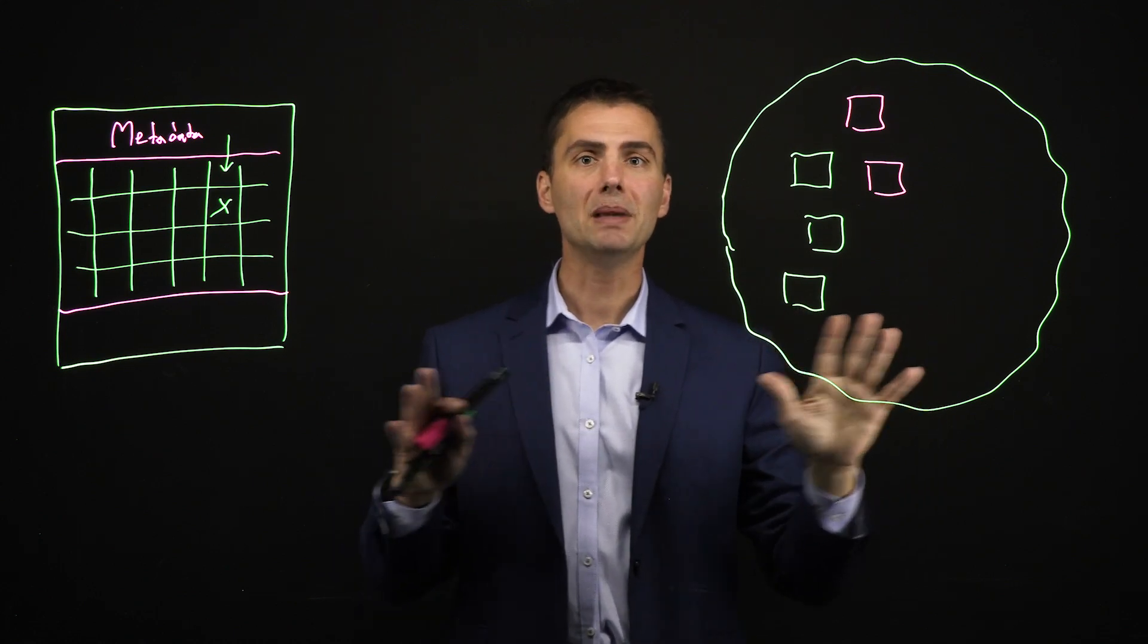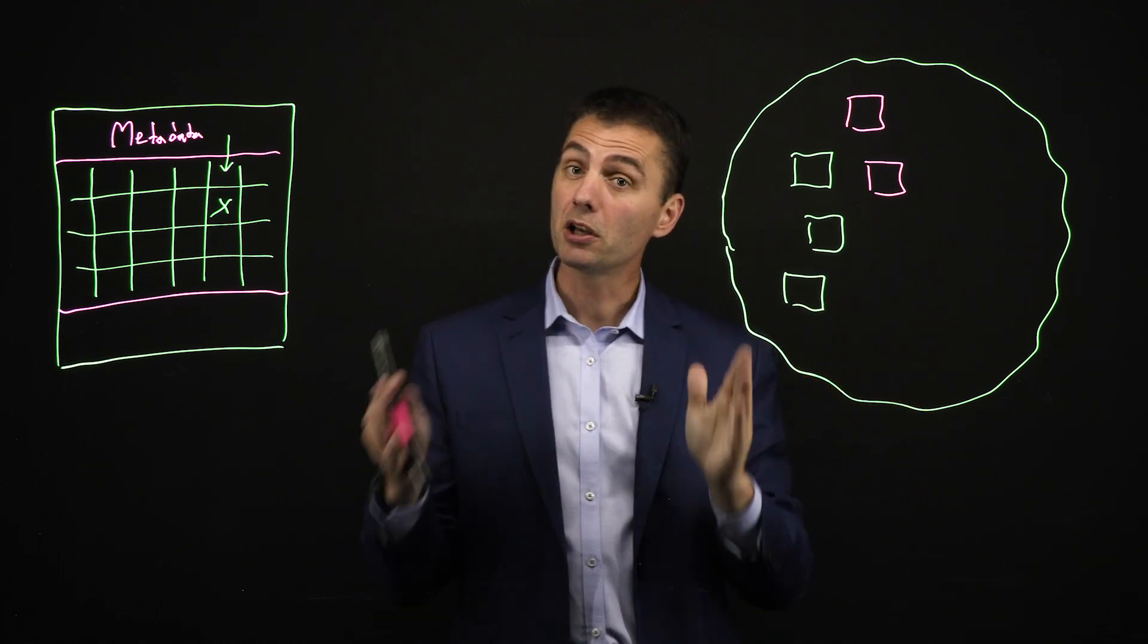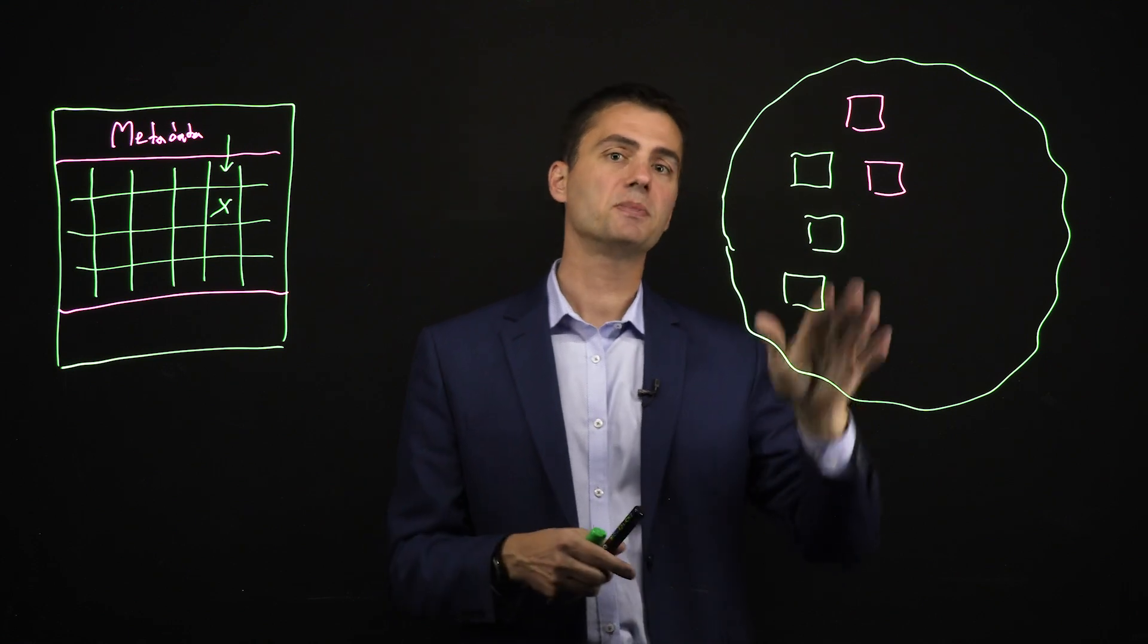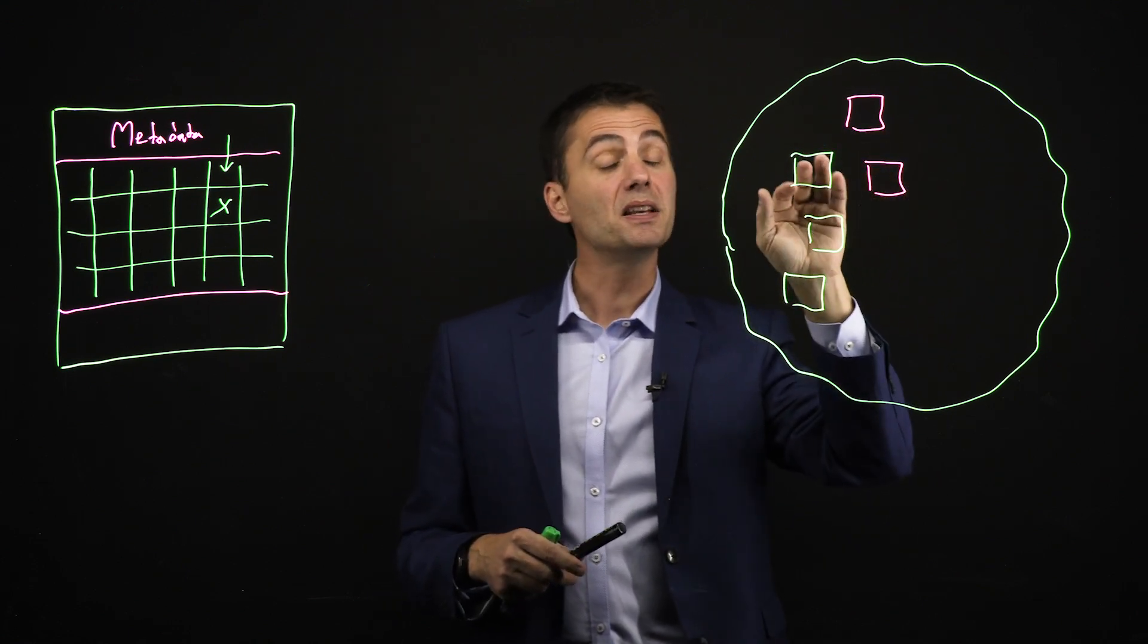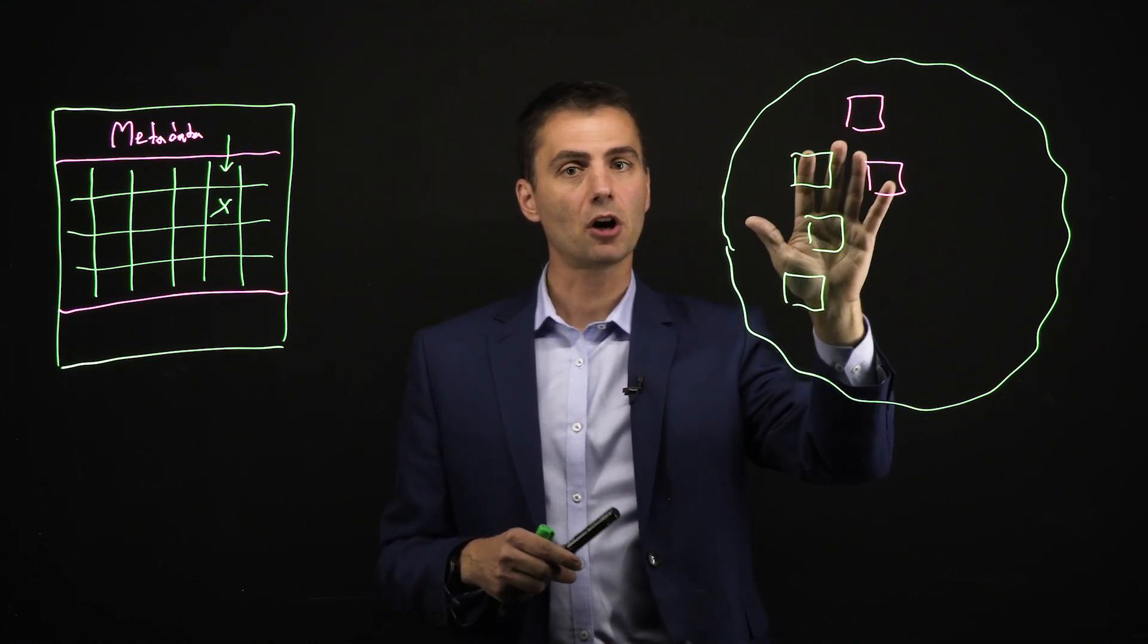Now, why is this interesting? It allows you to meet the 3-2-1 rules: three copies of your data, two different media types, and one off-site. This is also completely self-describing.